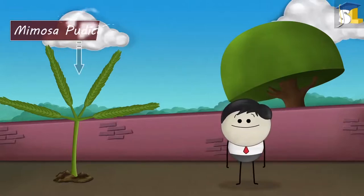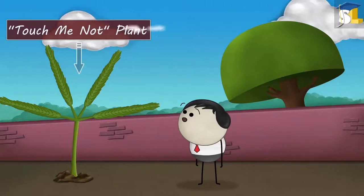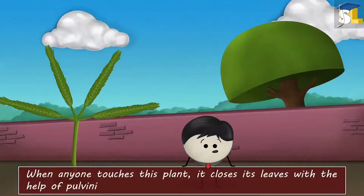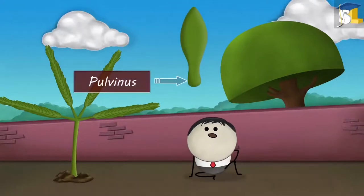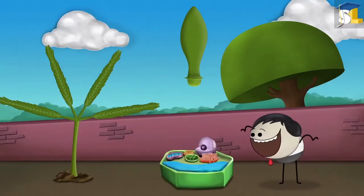This plant is called the Mimosa Pudica plant. Another name for it is touch-me-not plant. When anyone touches this plant, it closes its leaves with the help of pulvini. Pulvini are present at the base of each leaflet. They consist of cells filled with water.